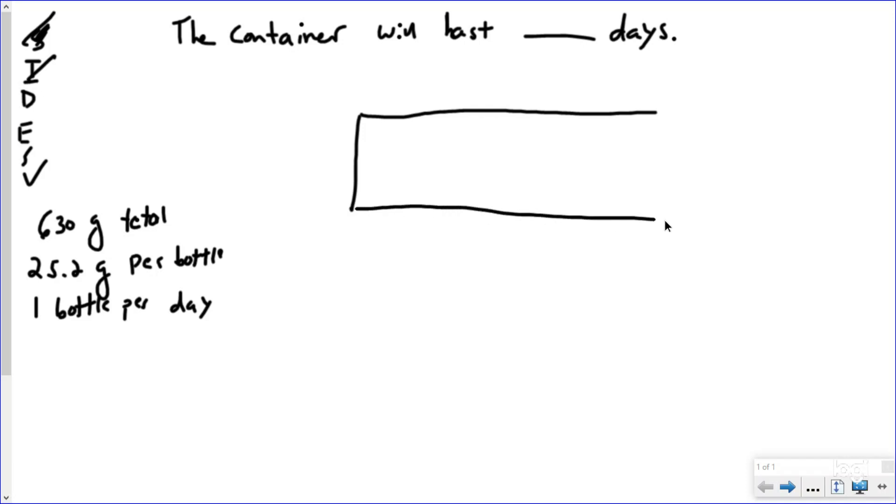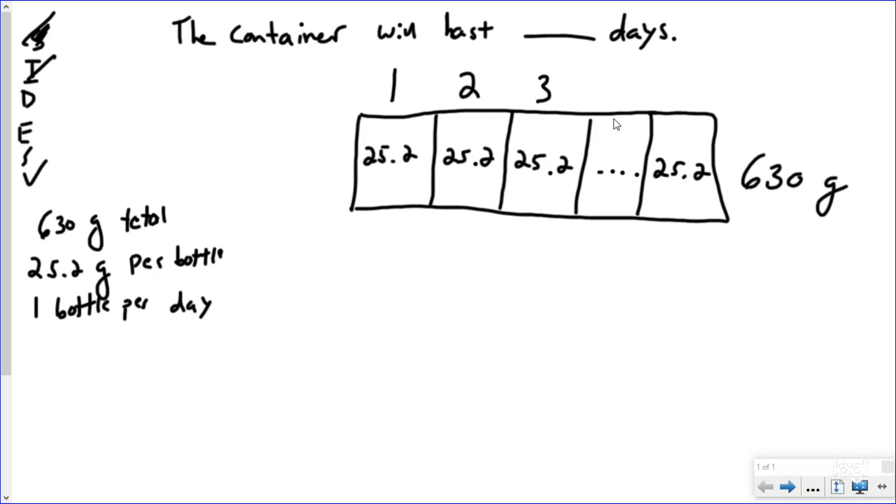So I'm going to use my old trusty part-whole model here. I know that there is 630 grams total in the entire container, and I'm making groups - it's supposed to be equal groups - of 25.2 grams. I'm going to leave that one blank right there. And every day, I did one bottle, right? So the first day, which is today, March 16, 2020, I'm using 25.2. The next day, tomorrow, I'm going to be using 25.2. The third day, I'm going to be using 25.2, and I'm going to keep doing that until I run out because my baby girl needs a bottle every day. So what I'm trying to do is figure out how many groups of 25.2 can I make from 630.